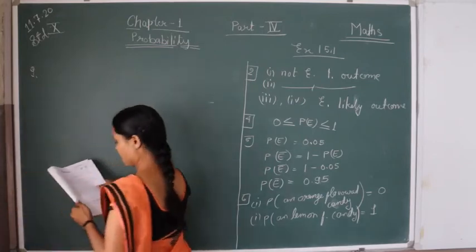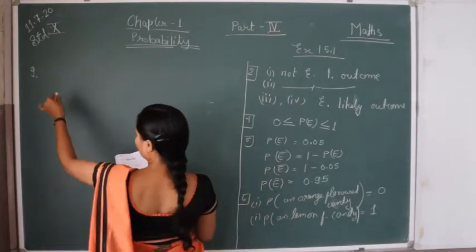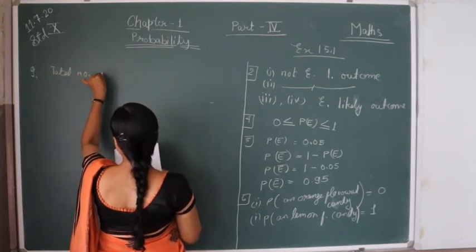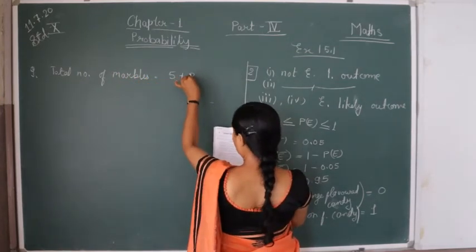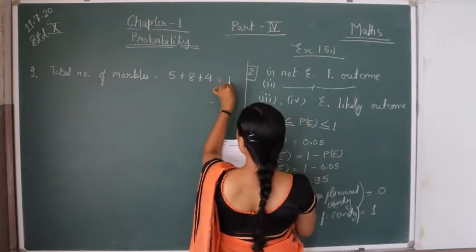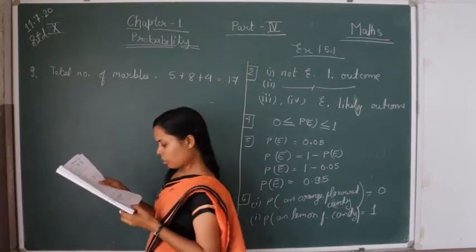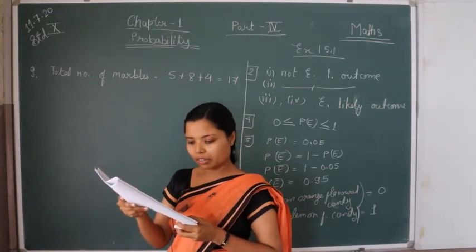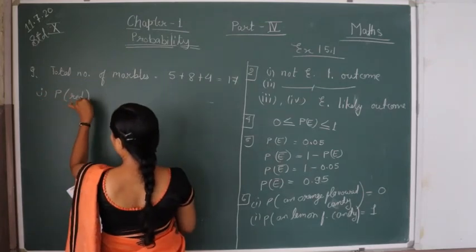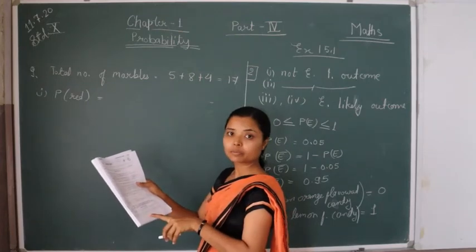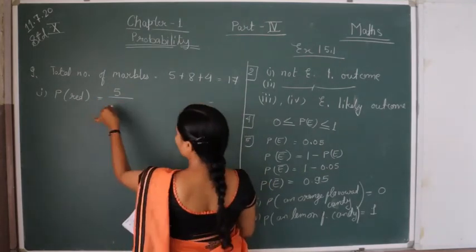Question 9: a box contains 5 red marbles, 8 white marbles, and 4 green marbles. The total number of marbles is 5 + 8 + 4 = 17 marbles, and this is the number of possible outcomes. One marble is taken out at random. The probability of getting a red marble: there are 5 red marbles as the favorable outcome, and 17 possible outcomes, so P(red) = 5/17.